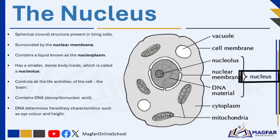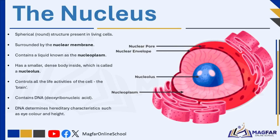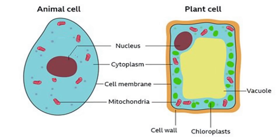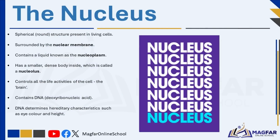The nucleus is one of the most important parts of a cell because it acts as the control center, just like a principal in a school who oversees all activities. It is a spherical structure found in all living cells and is surrounded by a nuclear membrane, which separates it from the rest of the cell. Inside the nucleus, there is a liquid called nucleoplasm and a smaller, dense structure known as the nucleolus. In animal cells, the nucleus is usually located near the center, while in plant cells it is found closer to the edge due to the presence of a large vacuole. The main function of the nucleus is to control all the life activities of the cell, similar to how a brain controls the functions of the body.